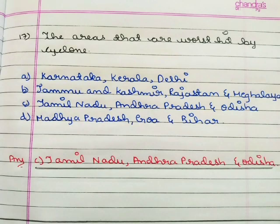Next question: the areas worst hit by cyclones are option A Karnataka, Kerala, Delhi, option B Jammu and Kashmir, Rajasthan and Meghalaya, option C Tamil Nadu, Andhra Pradesh and Odisha, option D Madhya Pradesh, Goa and Bihar. The correct answer is option C Tamil Nadu, Andhra Pradesh and Odisha.